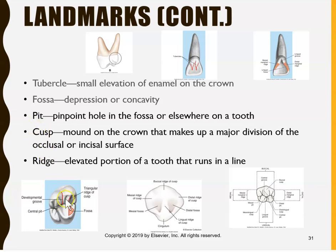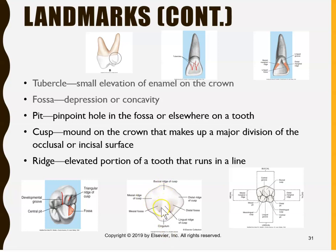A cusp is a mound on the crown. Looking at this example, we see four cusps — four mounds on the crown. A ridge is basically a line that runs through the tooth — an elevated portion that runs in a line. Here is the mesial ridge, here is the distal ridge, which we also call the marginal ridge. This is a lingual ridge because it's towards the lingual side, and this over here is a buccal ridge because it's towards the buccal or cheek side.